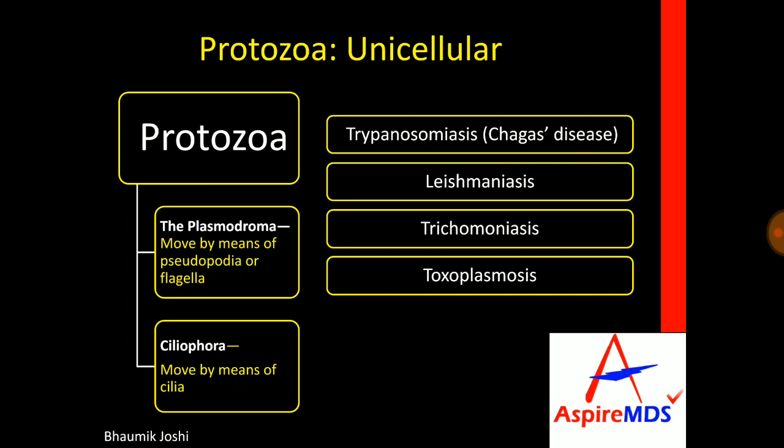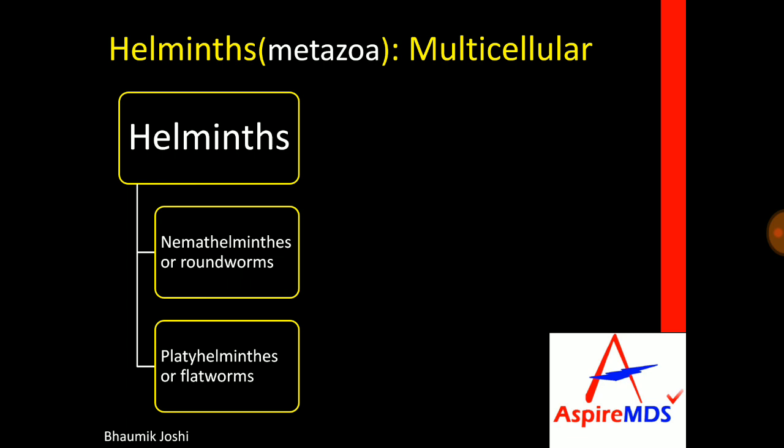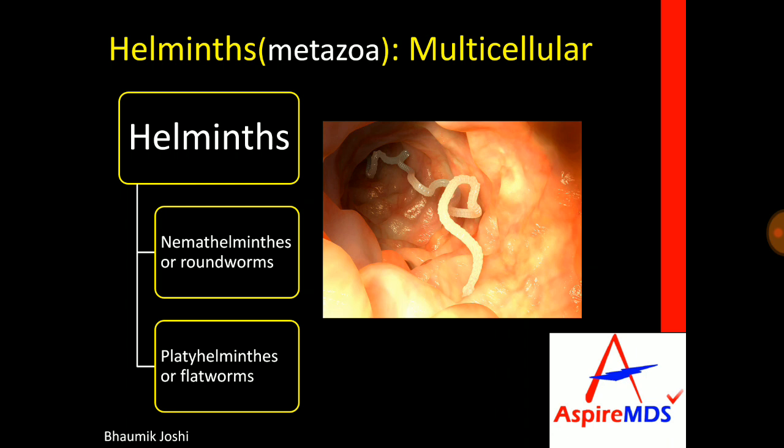Helminths are also known as metazoa. Helminths can be divided into two types based on shape: one is nemathelminthes or roundworm, and the other one is platyhelminthes or flatworm.